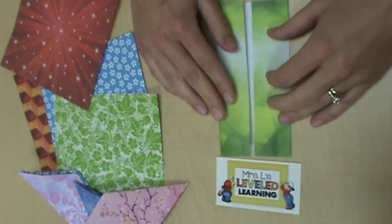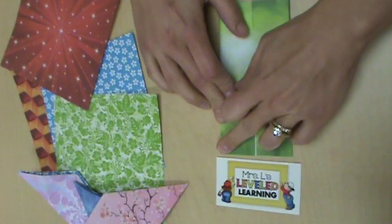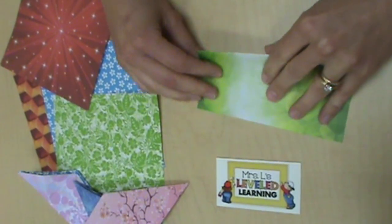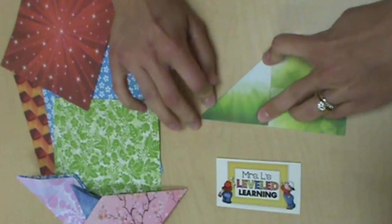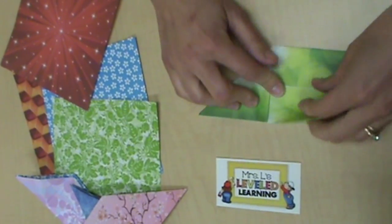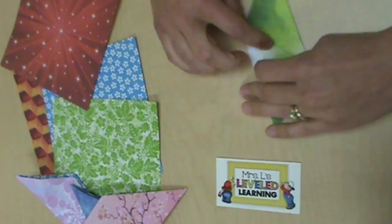Unfold each half and fold the sides into that line that you just made through the center. Now, unfold each side, and you're going to take one corner and fold it diagonally to the other edge.